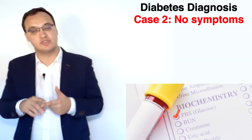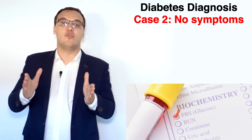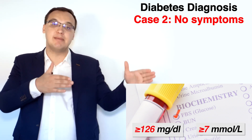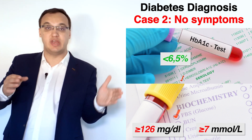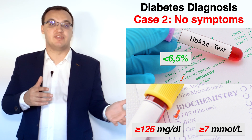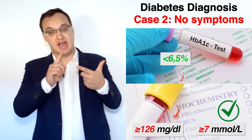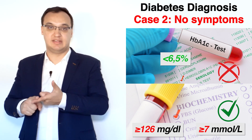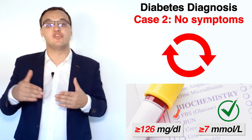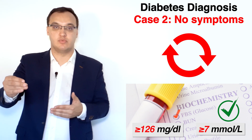What about the second option — the trickier one? For example, if we have a fasting plasma glucose of more than 126 mg/dL but hemoglobin A1c is showing a normal value less than 6.5%, then one test shows diabetes and the other doesn't. In that case, we repeat the test — usually the one that was positive, meaning the fasting plasma glucose level.